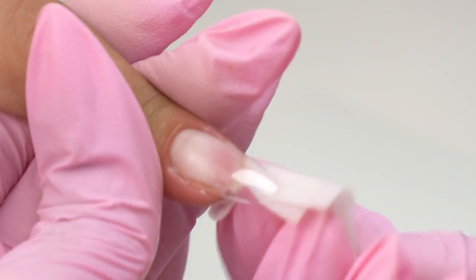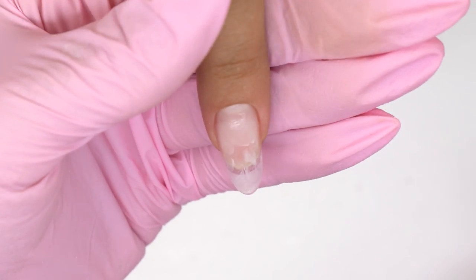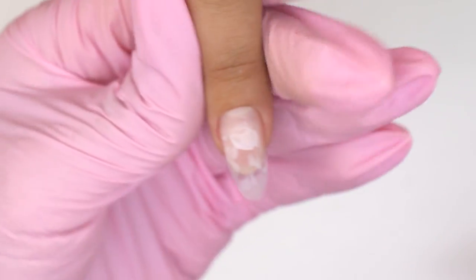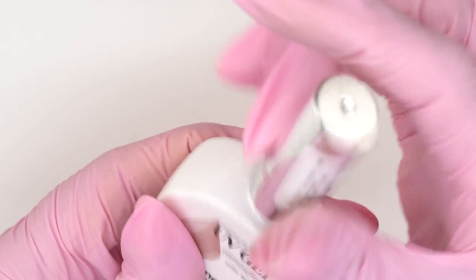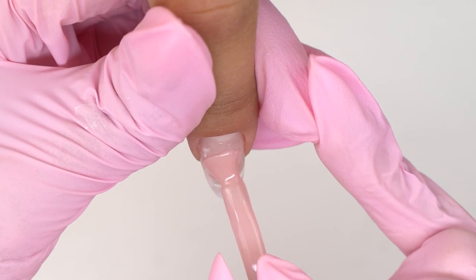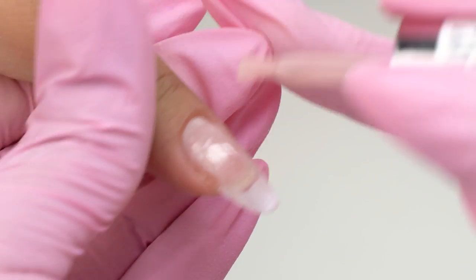I degreased the nail plate and now I need to build up the cuticle zone a little. I will be using this amazing camouflage bottle gel. I love using colored bottle gels as well. Those are medium and self-aligning.